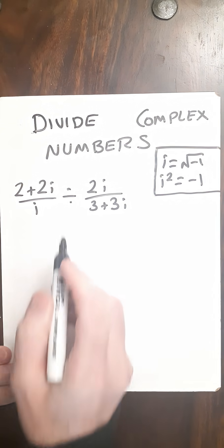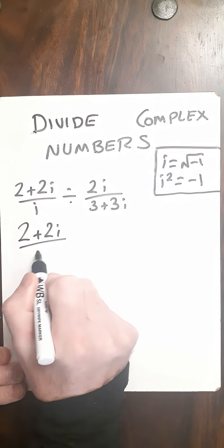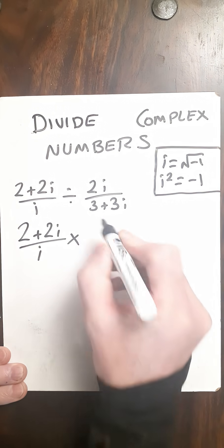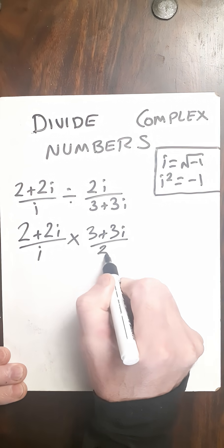So first things first, let's change this to a multiply. To do that, we keep the 2 plus 2i over i, change to a multiply, and take the reciprocal of this, 3 plus 3i over 2i.